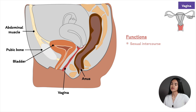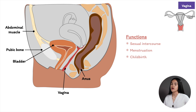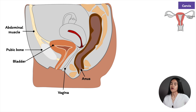The vagina is an organ of the female reproductive tract with multiple functions: sexual intercourse and transport of sperm to the uterus; menstruation, as it provides a passage for menstrual fluid and tissue to leave the body; and childbirth, serving as the birth canal. The vagina is a muscular tube that connects the uterus and cervix to the outside of the body, located near the bladder, urethra, rectum, and anal canal.